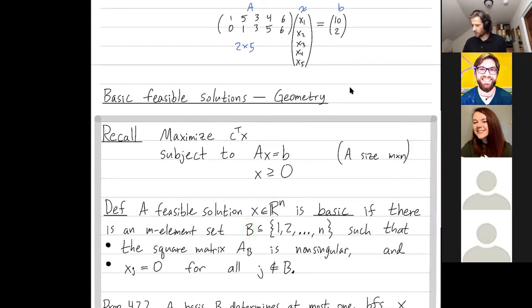And so a possible basis, capital B, would be, we could take capital B to be columns, say, 1 and 3, for example. And that's just because these columns are linearly independent. And then what is AB? AB is the matrix you get when you restrict to those columns. And we want this to be non-singular, as we've described. All right, so the basic feasible solution, however, is actually x.